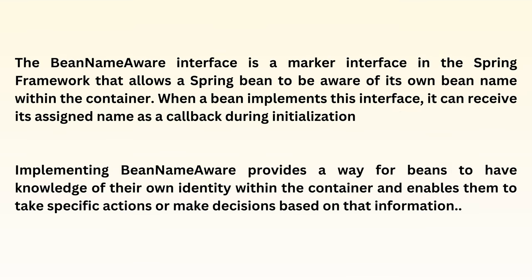The BeanNameAware interface is a marker interface in the Spring framework that allows a Spring Bean to be aware of its own Bean name within the container. When a Bean implements this interface, it can receive its assigned name as a callback during initialization. Implementing BeanNameAware provides a way for Beans to have knowledge of their own identity within the container and enables them to take specific actions or make decisions based on that information.